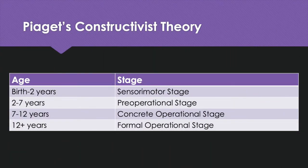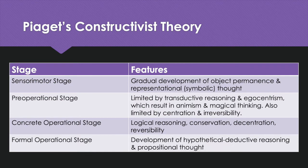Piaget's theory involves four stages. From birth to age two is the sensorimotor stage; from age two to seven is the pre-operational stage; from age seven to twelve is the concrete operational stage; and ages twelve and up is the formal operational stage. The sensorimotor stage involves gradual development of object permanence and representational or symbolic thought. The pre-operational stage is limited by transductive reasoning, egocentrism, animism, magical thinking, centration, and irreversibility. The concrete operational stage features logical reasoning, conservation, decentration, and reversibility. The formal operational stage is characterized by hypothetical deductive reasoning and propositional thought.